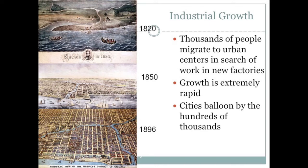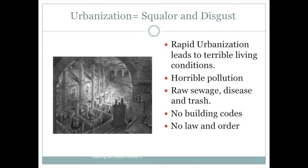This growth is illustrated by looking at Chicago. In the 1820s, it was nothing but a Native American fishing village. By the 1850s, it was a large city. And by 1896, it was what we would refer to as a megacity. This rapid population growth is called urbanization — when people move to a certain center and essentially form cities.